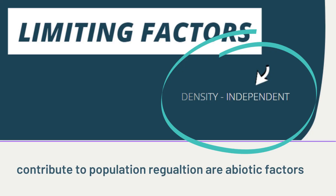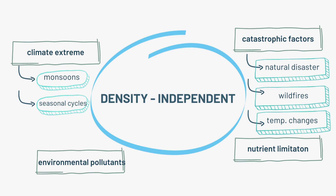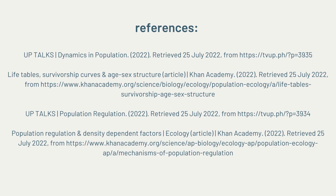In contrast, density-independent factors that contribute to population regulation are abiotic factors, including nutrient limitation, environmental pollutants, and climate extremes, including seasonal cycles such as monsoons. In addition, catastrophic factors such as natural disasters, wildfires, and temperature changes can also impact population growth, and these count as density-independent factors.